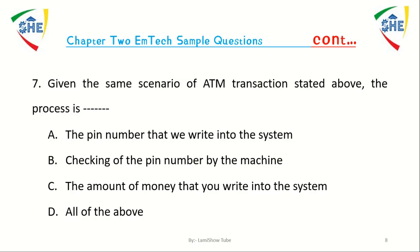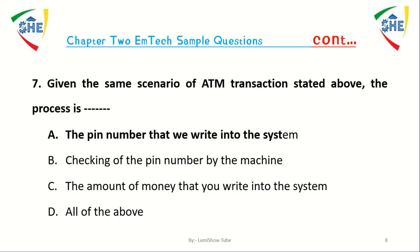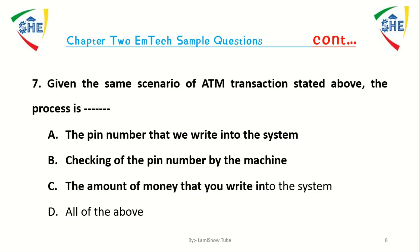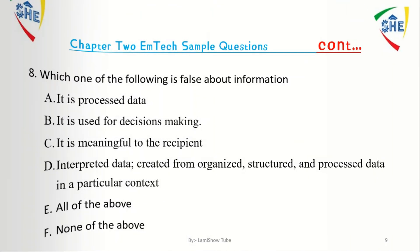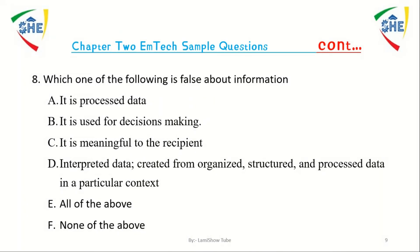Question number 7: Given the same ATM scenario from question number 6, the process is dash. A) The PIN number that you write into the system, B) Checking the PIN number by the machine, C) The amount of money you write into the system.